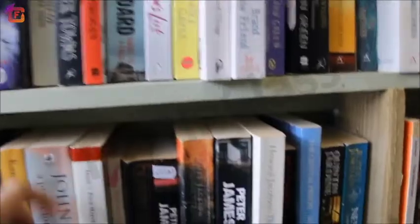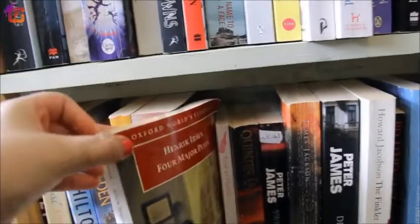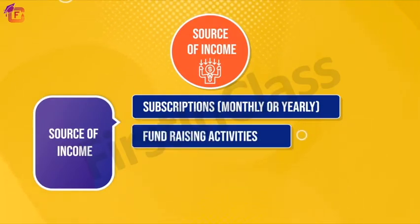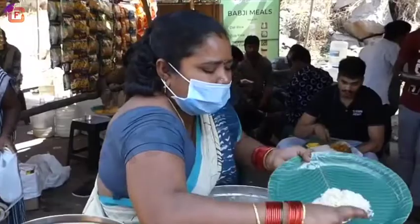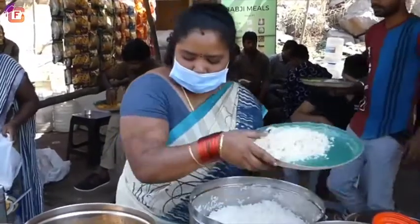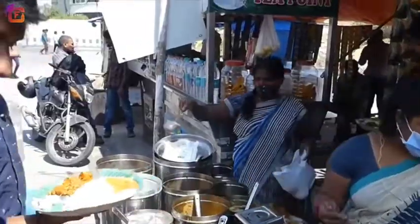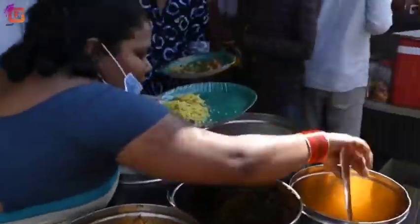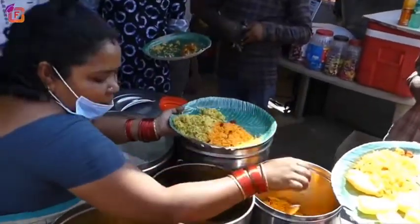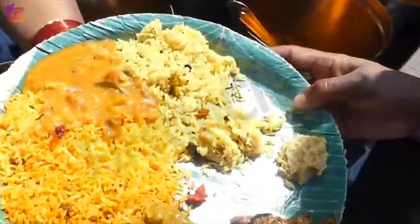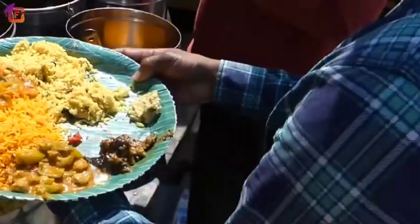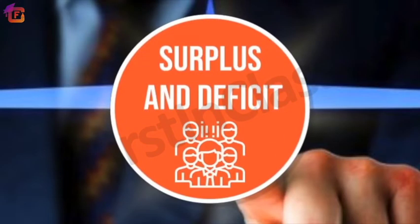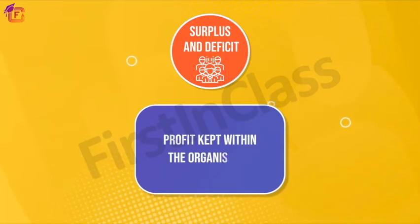Sources of funds received by clubs and societies include subscriptions, money made from fundraising activities, and donations. They may even run profit-making events such as selling refreshments. Such organizations do not earn profits from the sale of goods in the same way that a business does.